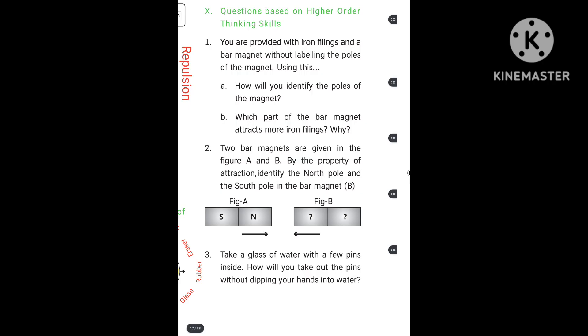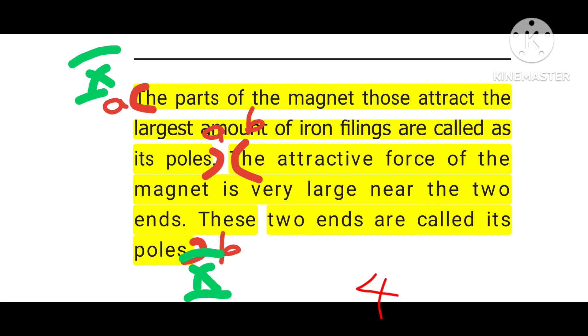Second question. 10th Roman - questions based on higher order thinking skills. First question: You are provided with iron filings and a bar magnet without labeling the poles of the magnet. Using this, how will you identify the poles of the magnet? Answer: Page number 4, below that picture, first line. The part of a magnet that attracts the largest amount of iron filings is called its poles.